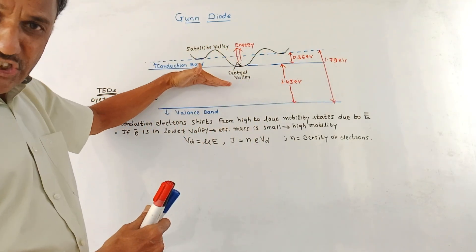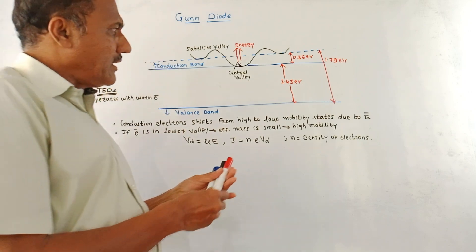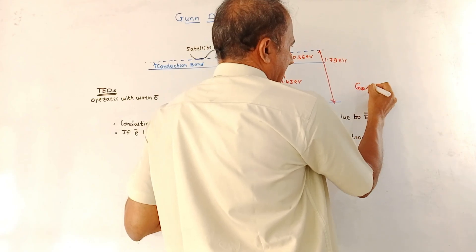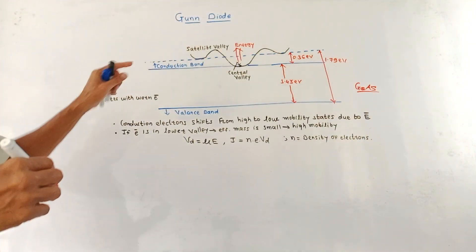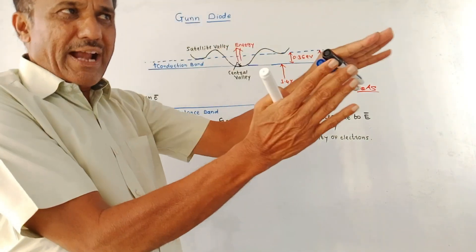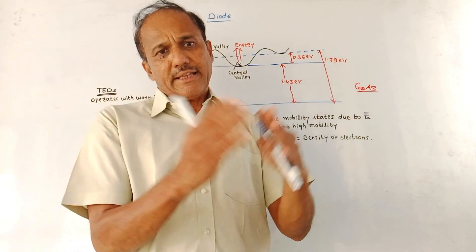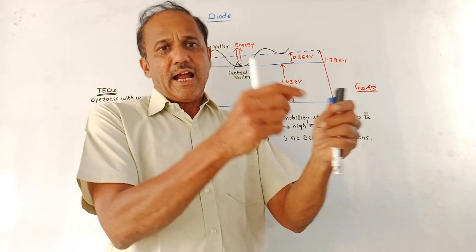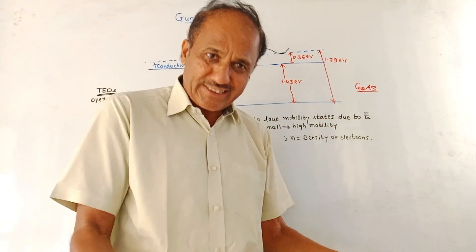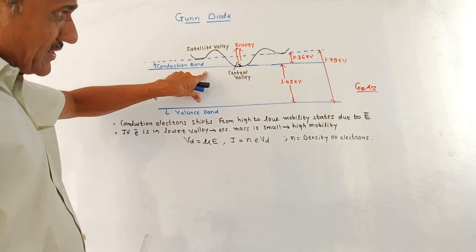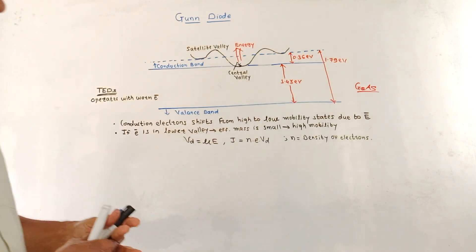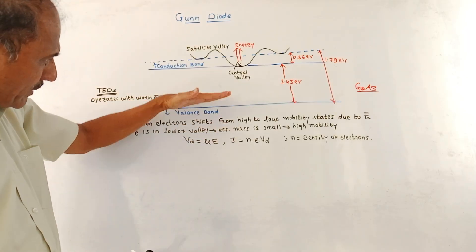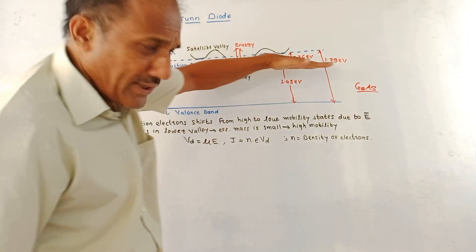To explain the two-value structure, we consider the material gallium arsenide. We know there are two major bands: the valence band and the conduction band. Whenever electrons are in the conduction band, they produce conductivity — they are free to cause conduction, and because of that, current starts flowing through the circuit. This is the band structure of gallium arsenide material.